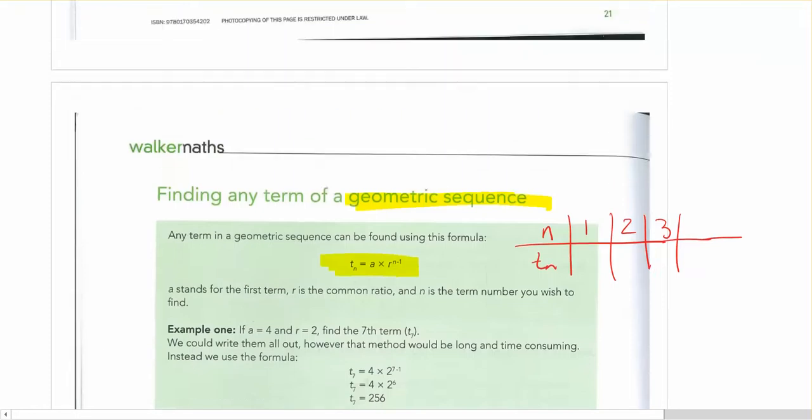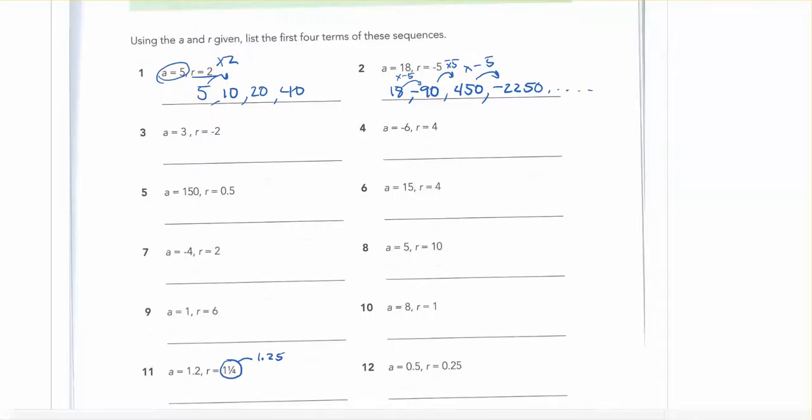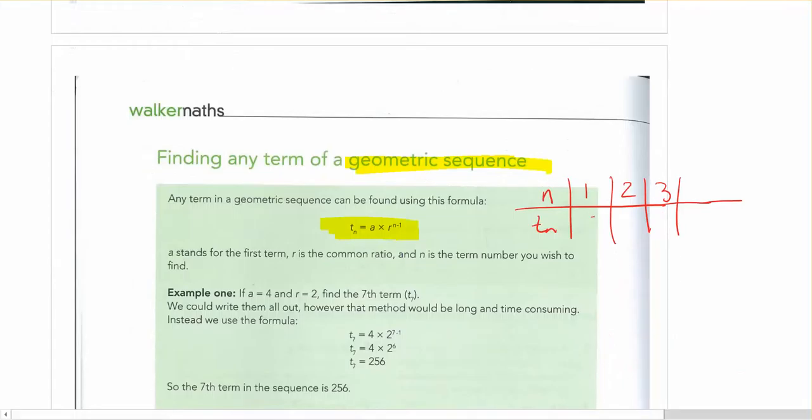So for instance, one of the sequences that we had before, such as this one here, 5, 10, 20, 40. First term is 5, second term is 10, third term is 20, fourth term is 40. These are the T values, and N is just telling us which one in the sequence.